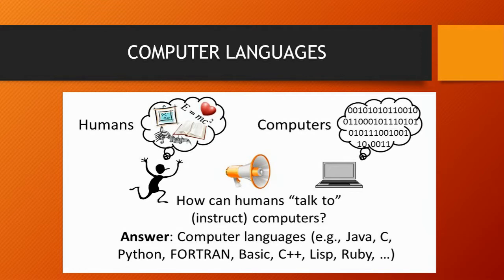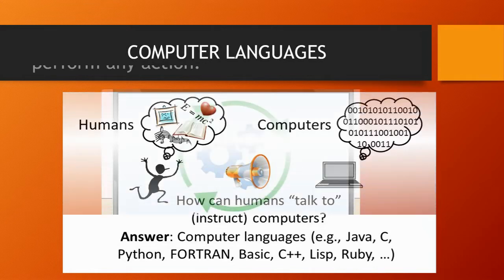Our language is different and the computer language is different. Then how can a human talk to the computer? The answer is using computer languages. Some examples are Java, C, C++, Python, Fortran, Basic. These are examples of computer languages using which we can talk to the computer.